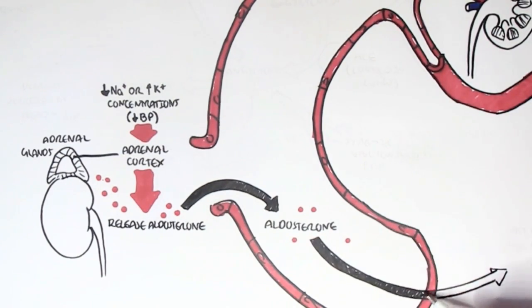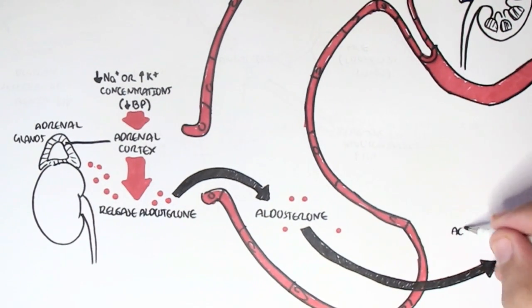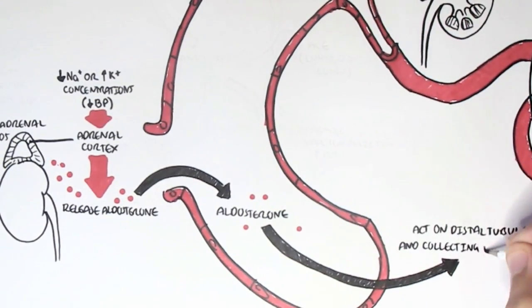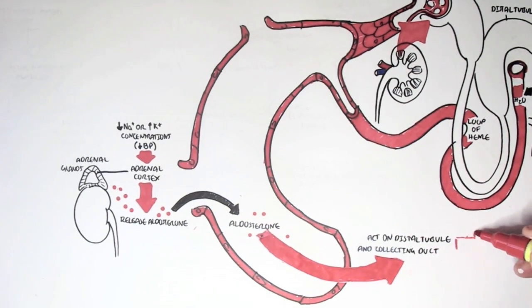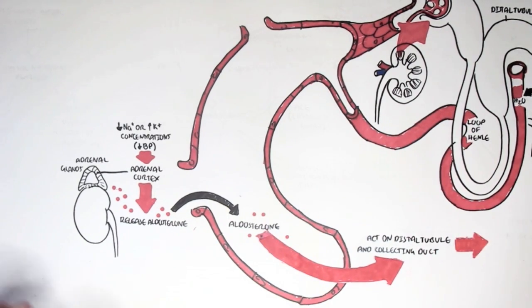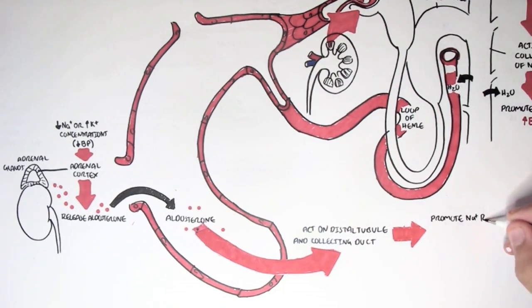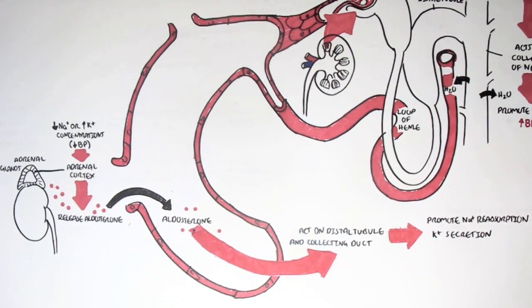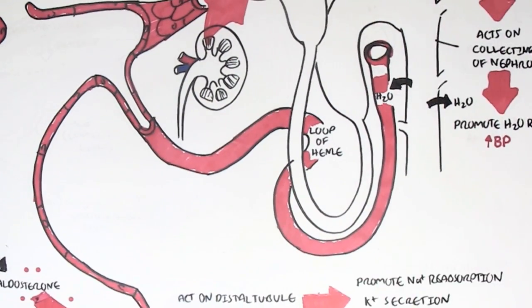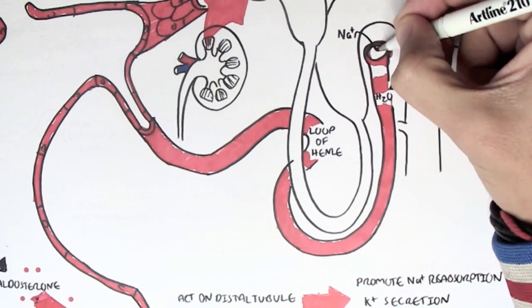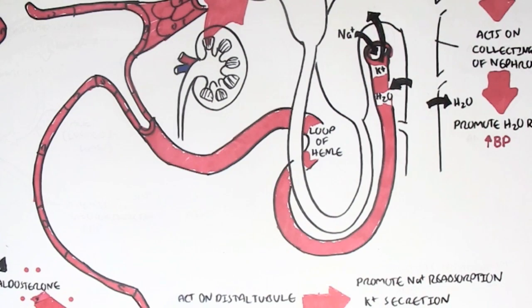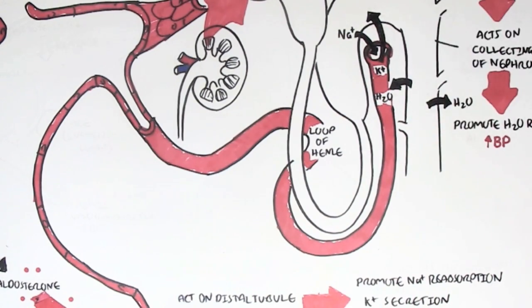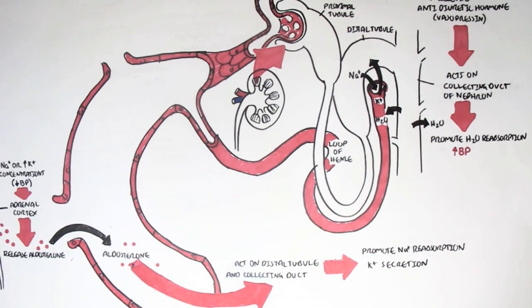Aldosterone is released into the bloodstream and travels around the body, targeting specifically the kidneys and acting on the distal tubule and the collecting ducts. Here it promotes sodium reabsorption as well as potassium secretion. When sodium is reabsorbed, water follows, increasing plasma volume and therefore increasing blood pressure.